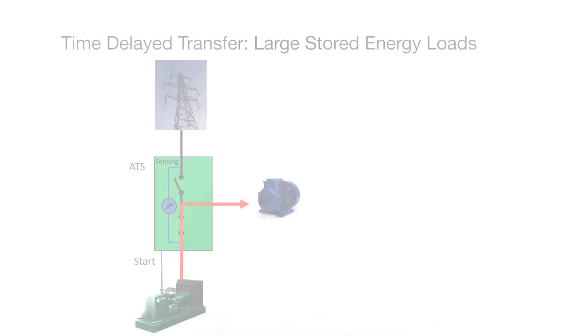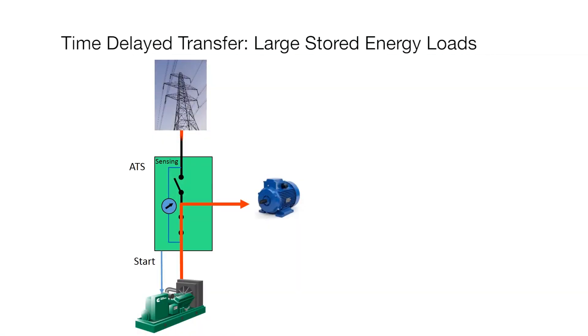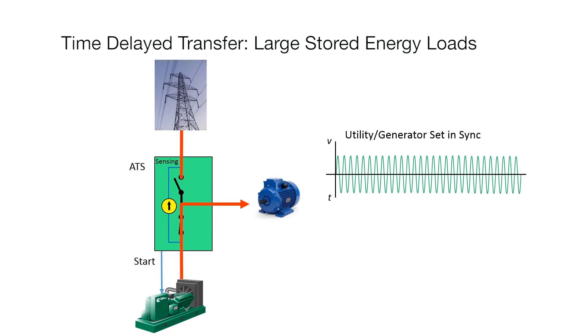If a large motor load is powered by the generator and the utility source becomes available, before transferring back to the utility source, the ATS mechanism stops in the center-off position for a predefined amount of time to allow the residual voltage to decay to a safe level.